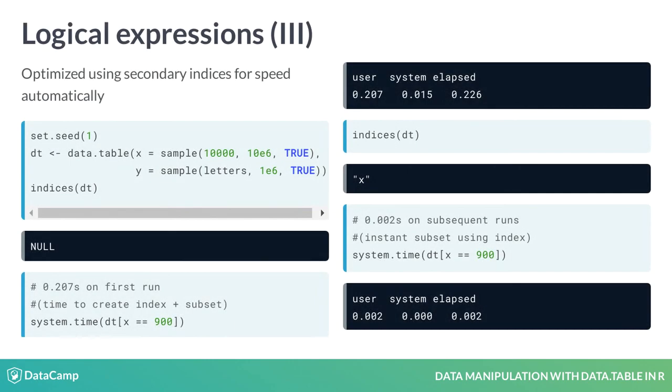As mentioned in the first video, data table is fast. It automatically creates an index or key of the columns used to subset the data so that any subsequent operations on that column are incredibly faster. You can have a look at all such indices using the indices function.